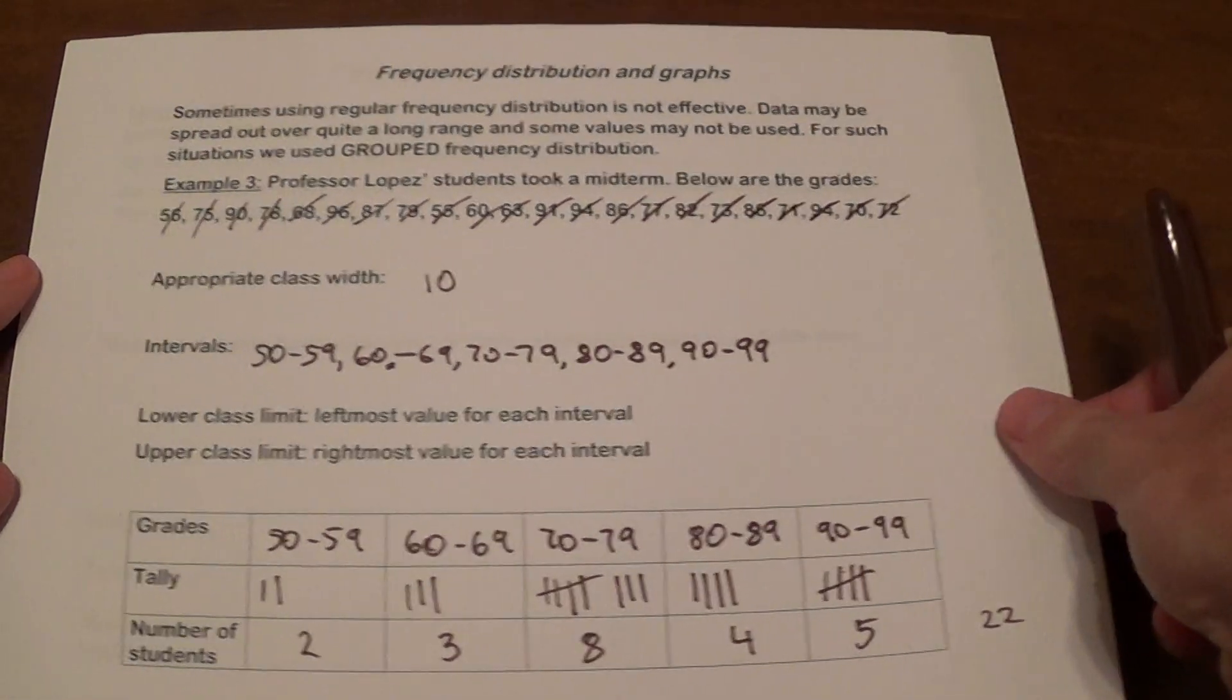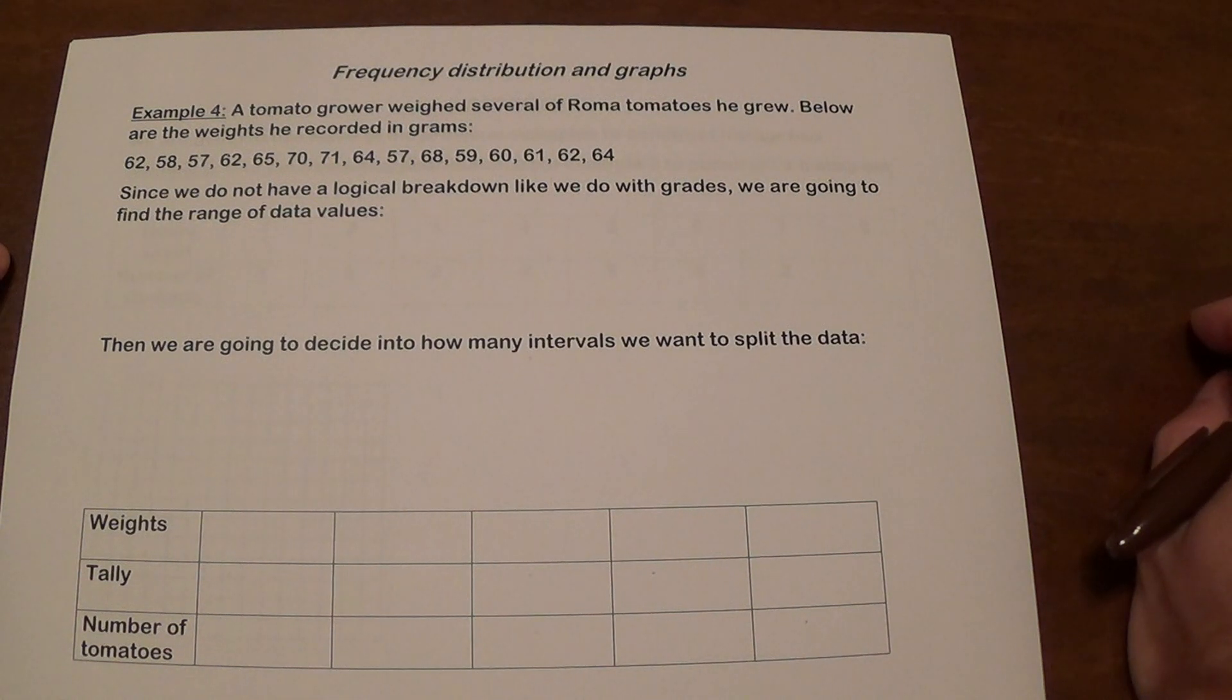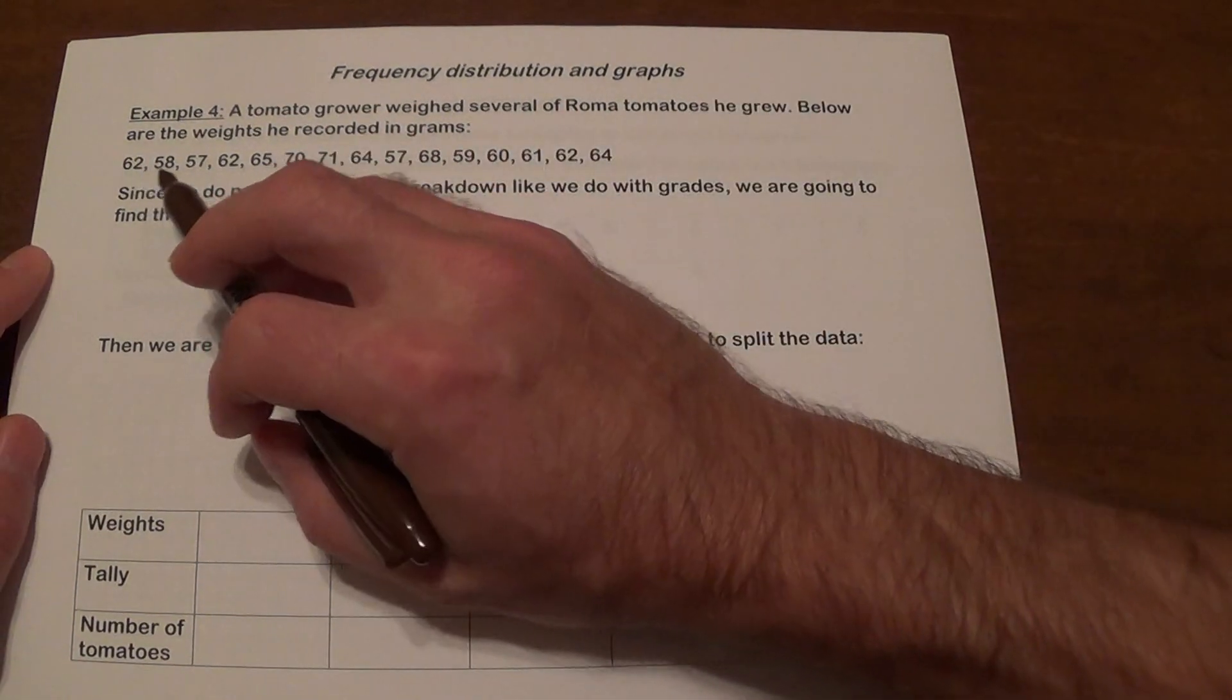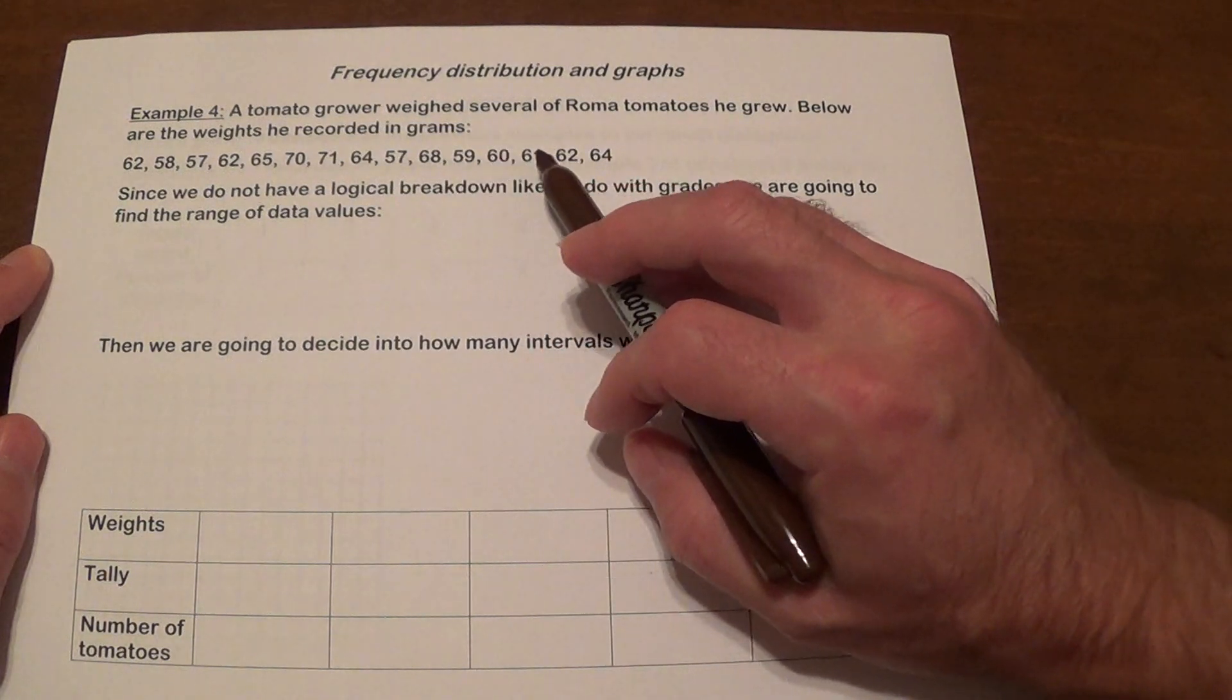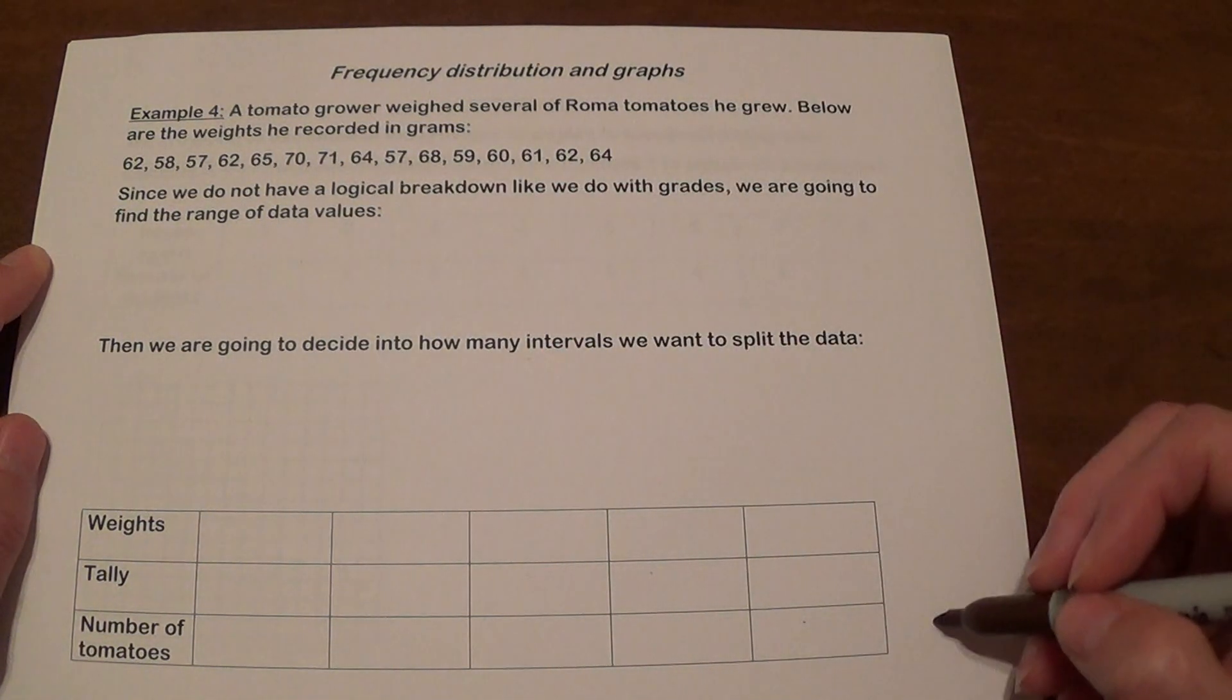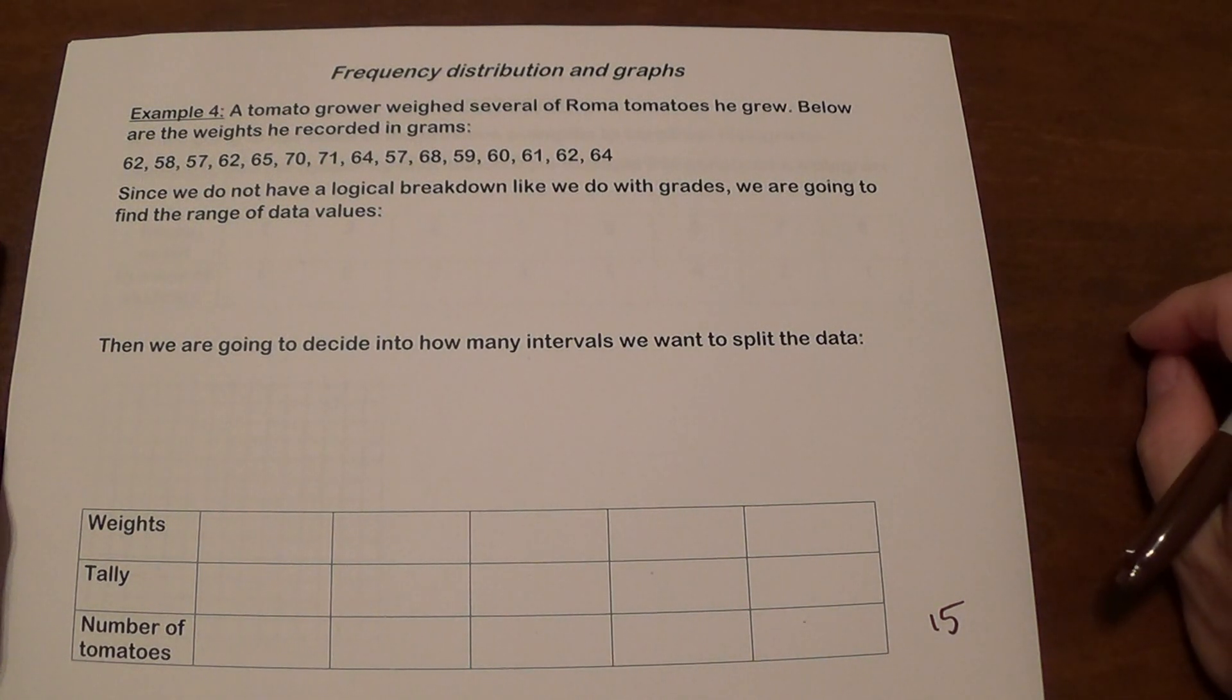Now this was a little bit more obvious. What do you do with the situations when things are not as logical? So we have a tomato grower who weighed several Roma tomatoes he grew and these are the weights that he recorded. We don't have a logical breakdown like we did with grades. So we need to figure out how we want to do it.